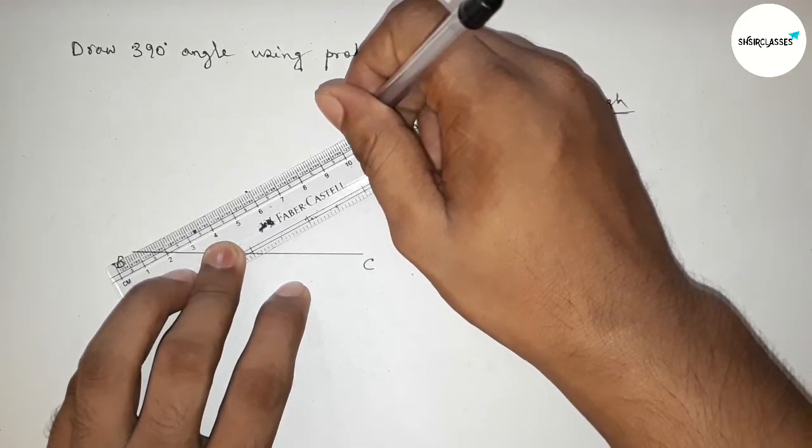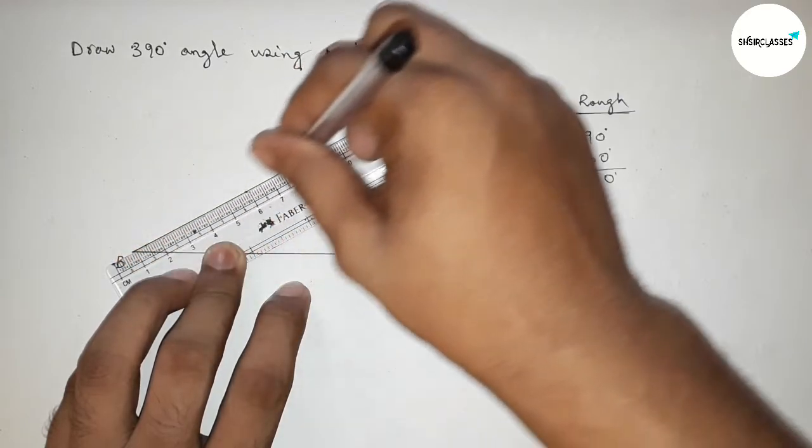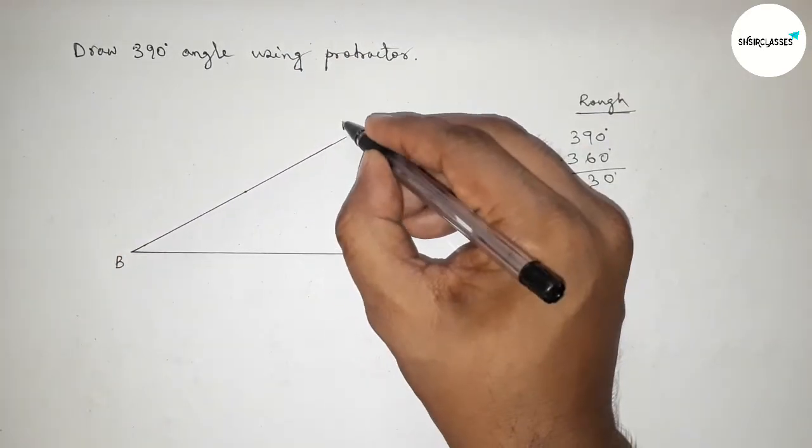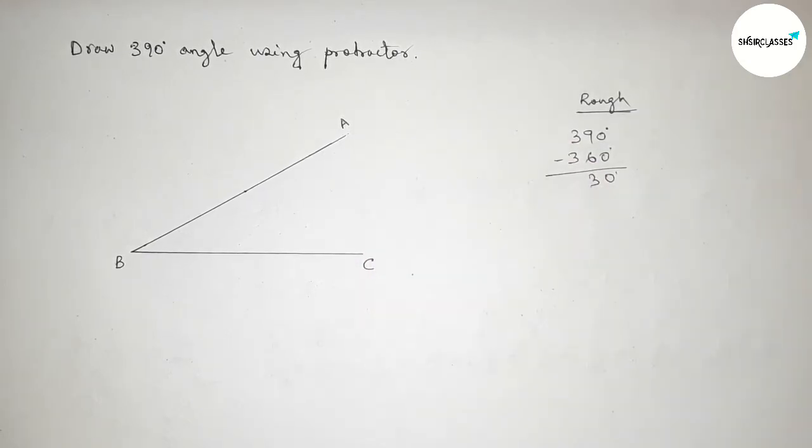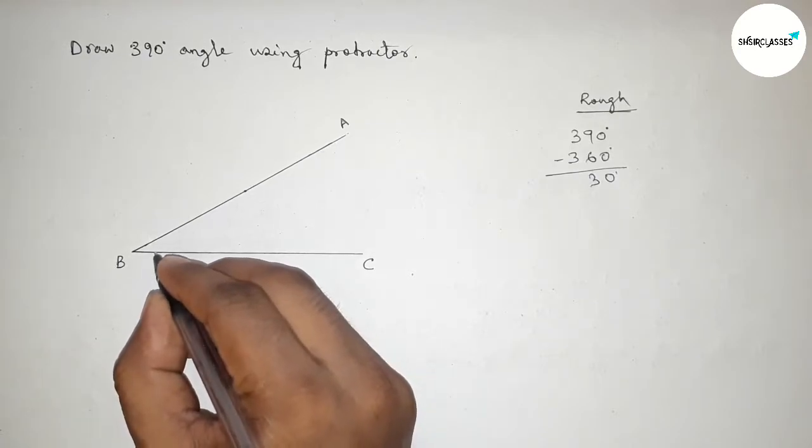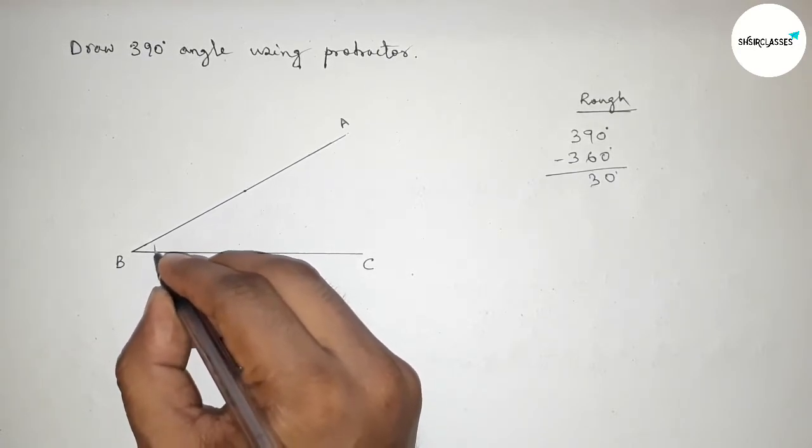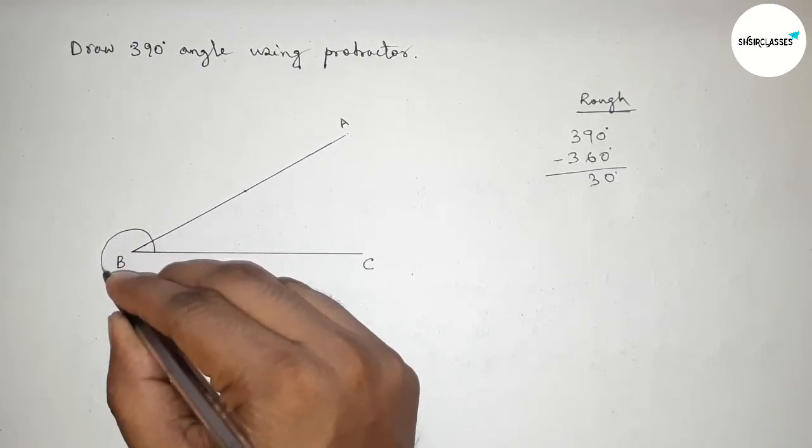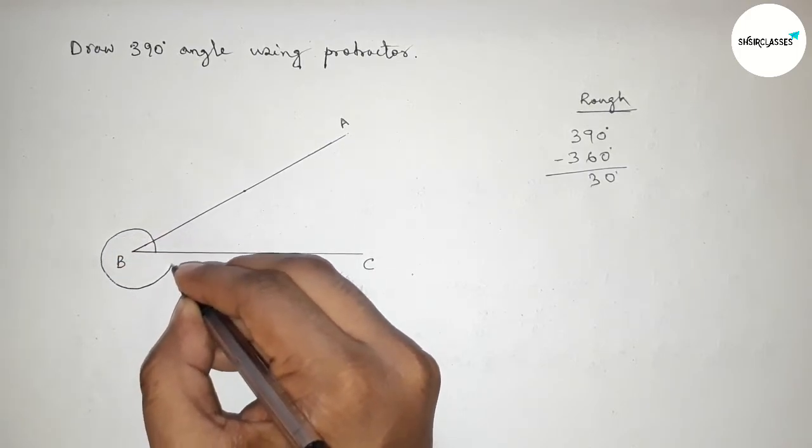Next we have to draw an arc from the point BC to the line AB by this way. So first drawing here an arc by this way from the line BC to the point AB.